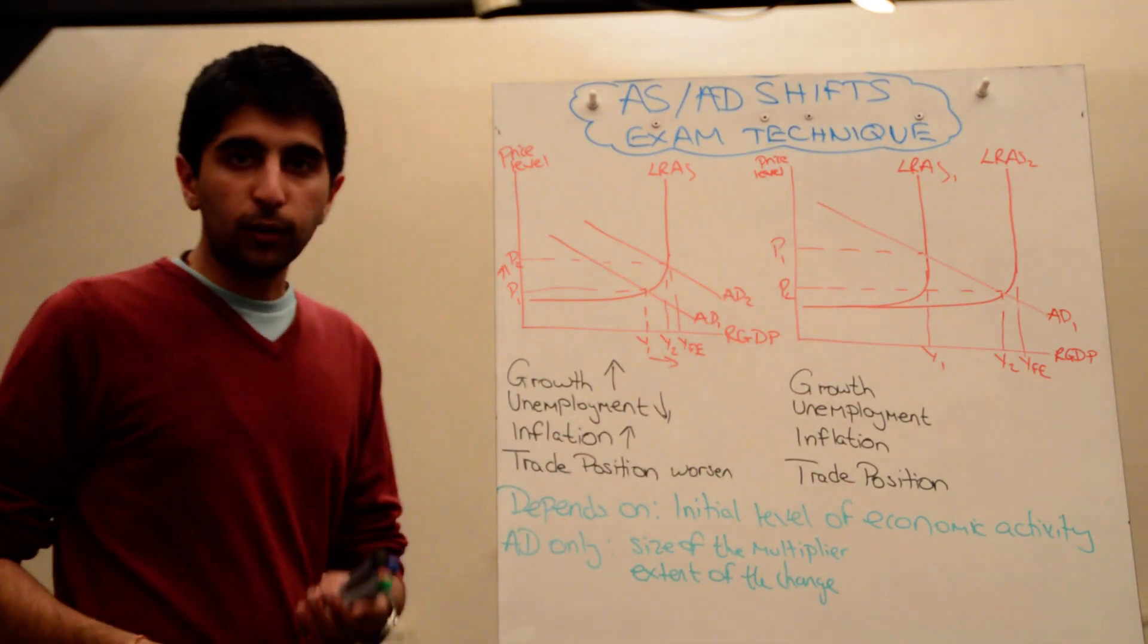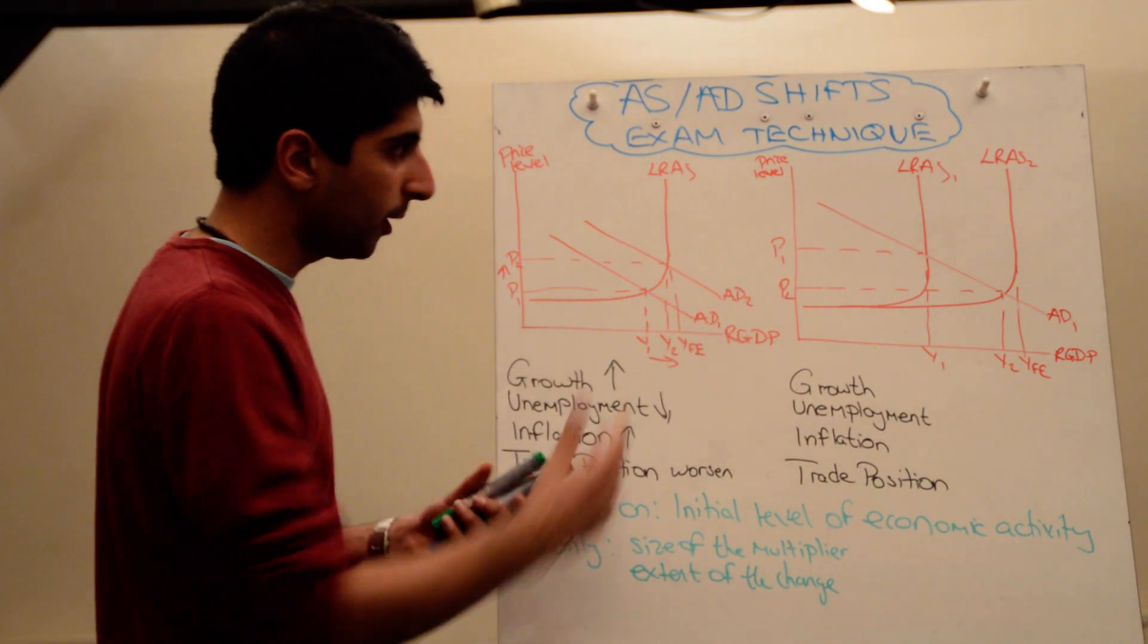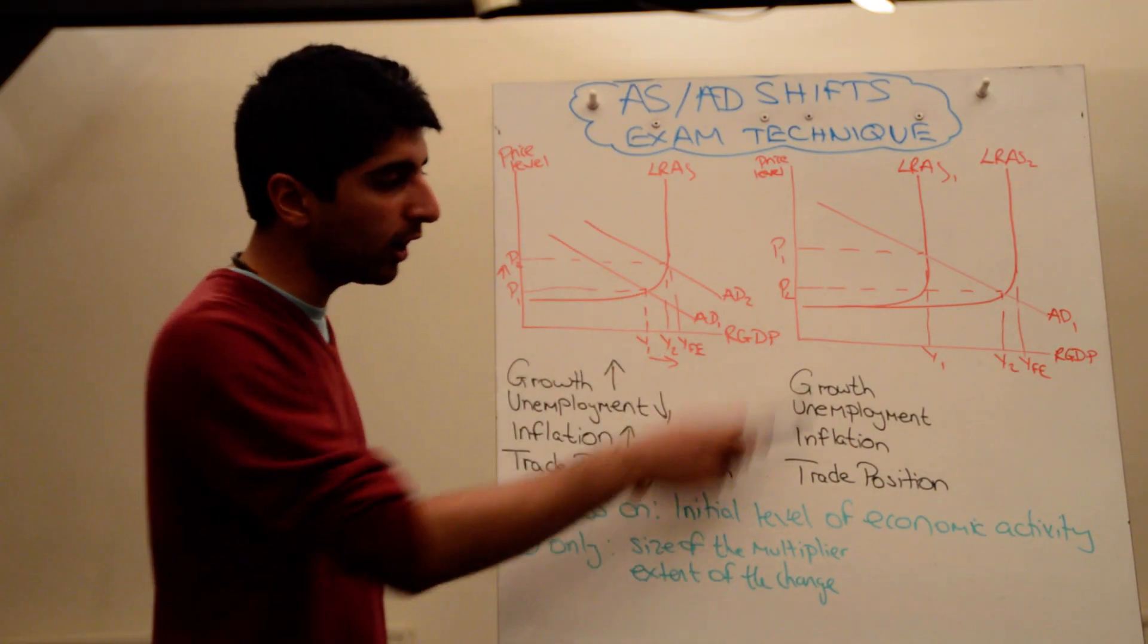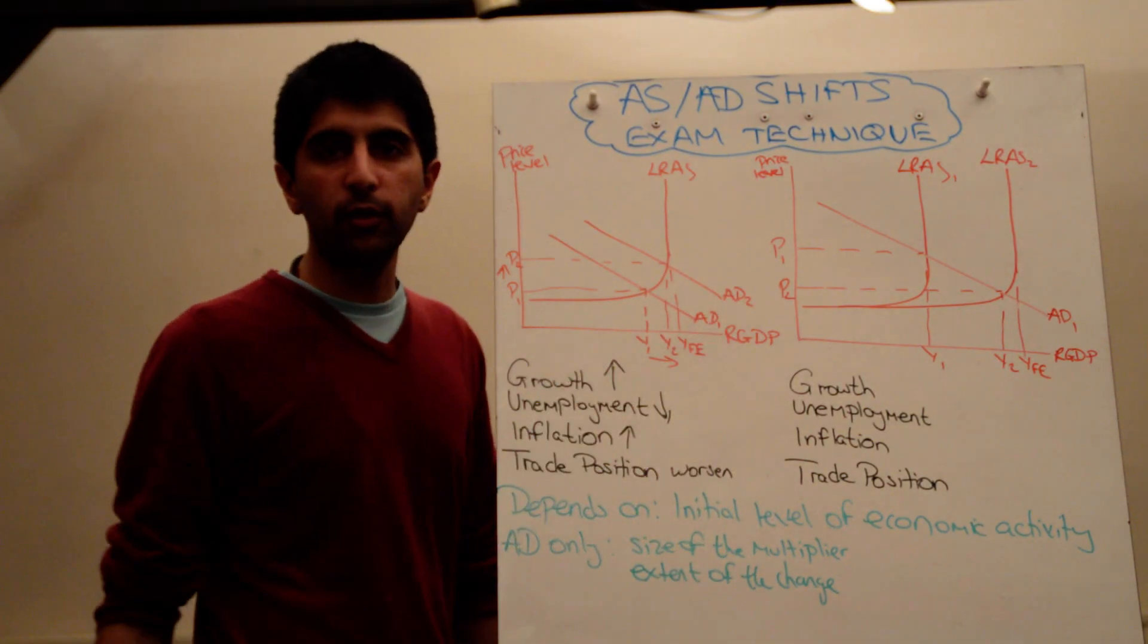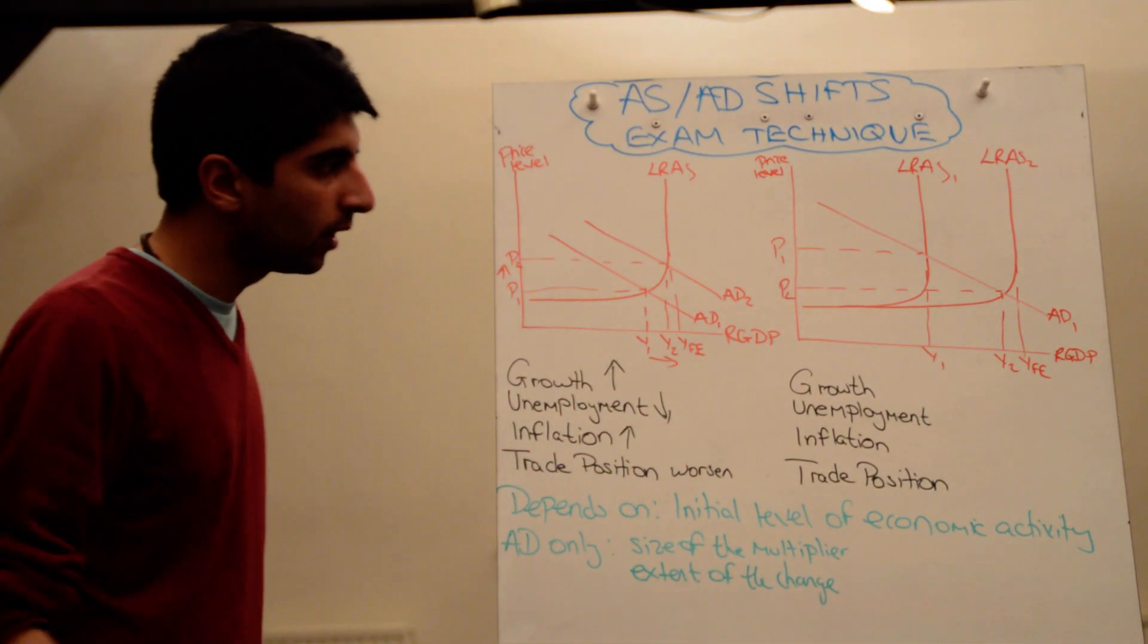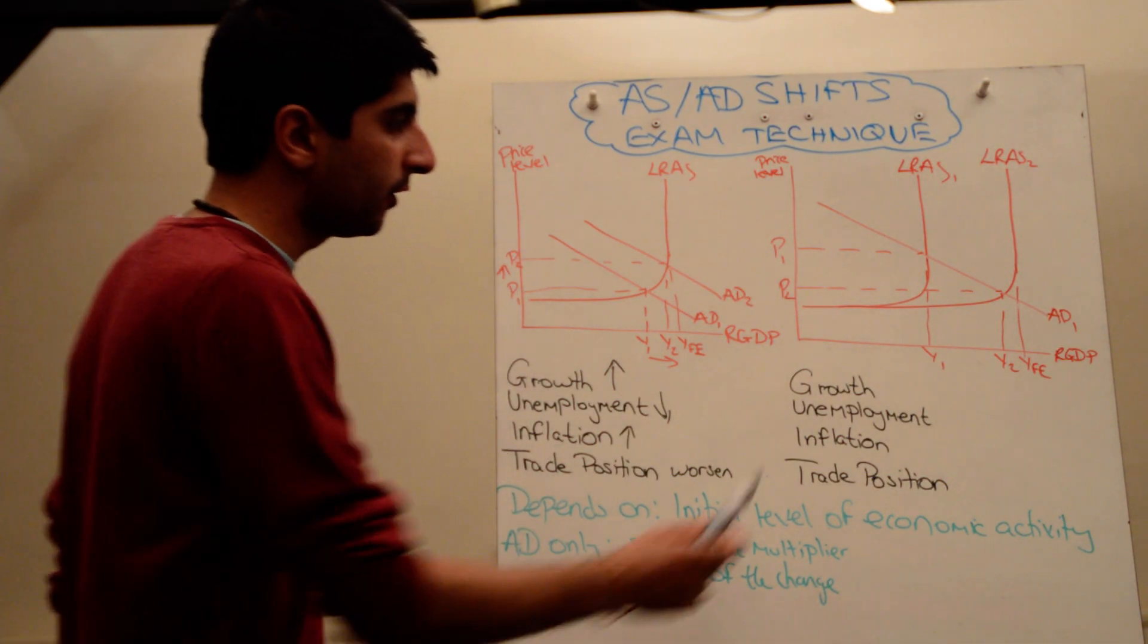Right, let's do the same thing for a long-run aggregate supply shift. So an aggregate supply shift to the right, what's going on? Well, have a look now. You pause the video now and have a go. What's going on to each of the four macro indicators and why? See if you can do that.